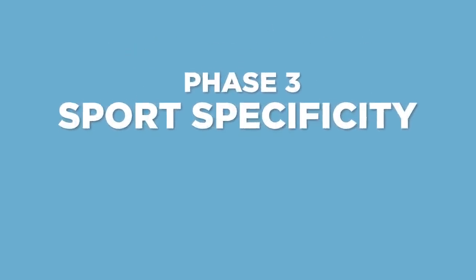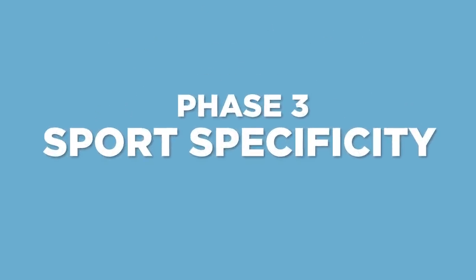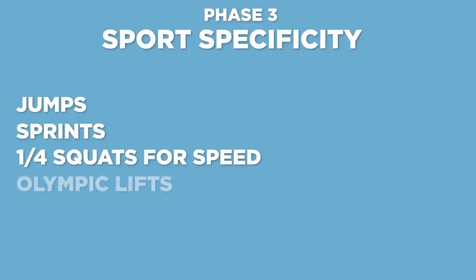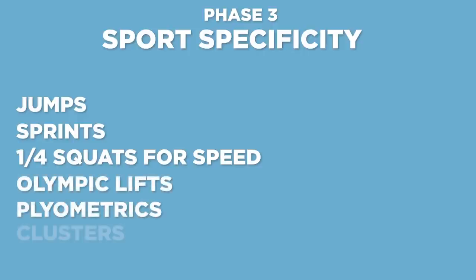Phase 3 is one of two things: it's straight to the sport, or it's time to move to high power or high velocity training. In the gym, this phase looks like jumps, sprints, quarter squats for speed, Olympic lifts and variations, plyos, cluster sets, etc. In this phase, we are utilizing the strength and muscle we built in phases 1 and 2 to become specific to rate of force development.